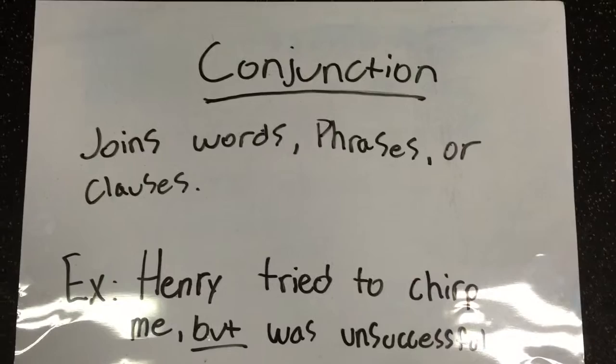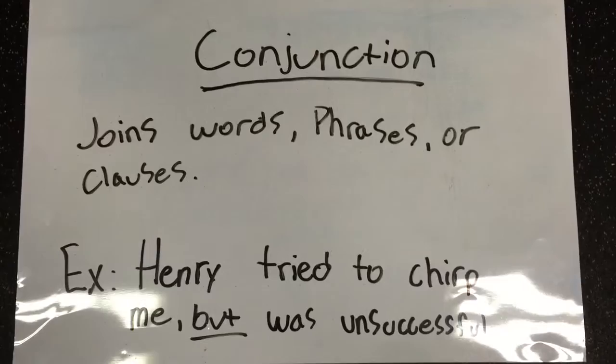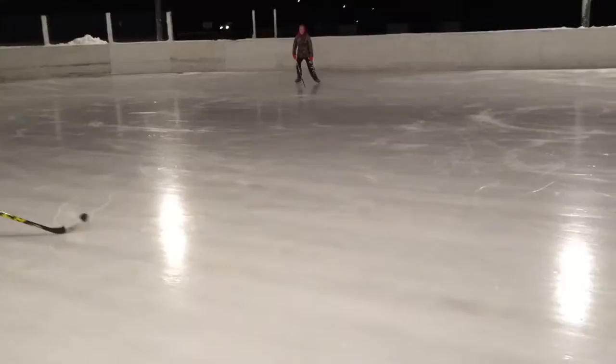A conjunction joins words, phrases, or clauses. It's things like: and, because, or, but, etc. An example would be: Henry tried to chirp me, but was unsuccessful.